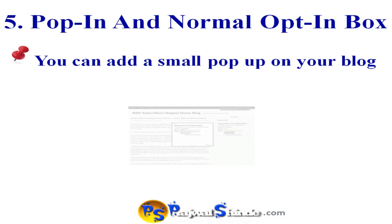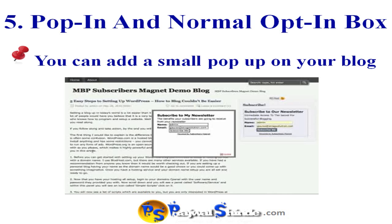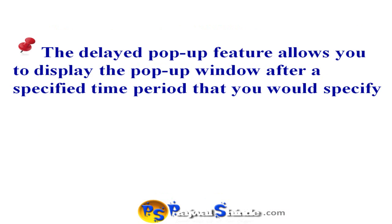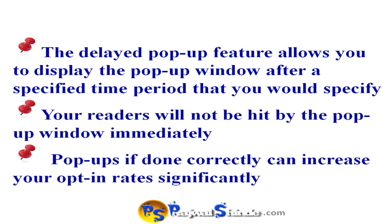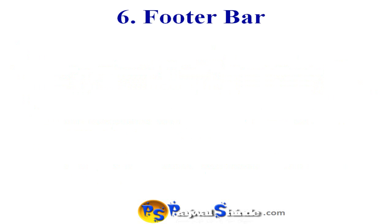The fifth feature is the pop-up and normal opt-in box. You can add a small pop-up on your blog asking for your visitor's first name and email. The delayed pop-up feature allows you to display the pop-up window after a specific time period that you specify in your WordPress admin area. This ensures that your readers will not be hit by the pop-up immediately as they visit your site, and pop-ups done correctly can increase your opt-in rates significantly.